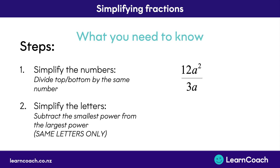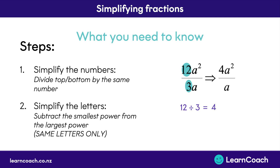So here's what you need to know from this video. You're going to see some kind of fraction like this: 12a squared divided by 3a. The first thing you want to do when simplifying those fractions is simplify the numbers. Here we have 12 divided by 3, which equals 4. So we can write out 4 and keep the letters as they are. Then we move on to step 2, where we subtract the smallest power from the largest power.